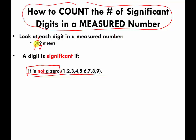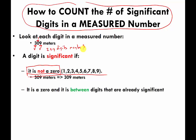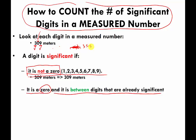Right now, 309 meters has at least two significant digits and maybe three, because we don't yet know if the zero is significant. Here's another rule: a digit is significant if it's a zero sandwiched between digits that are already significant. Is the zero in 309 significant? Yes — it's between the 3 and the 9, which are already significant. So 309 meters definitely has three significant digits.